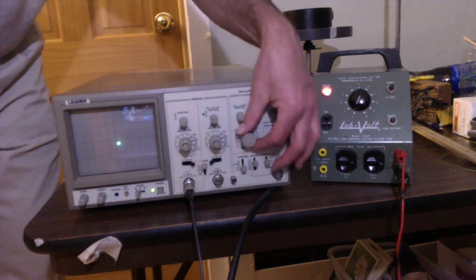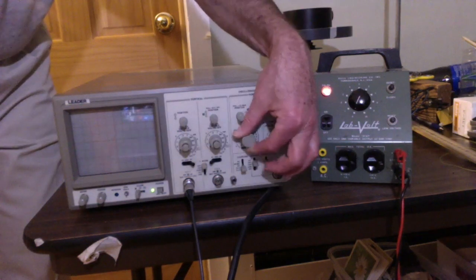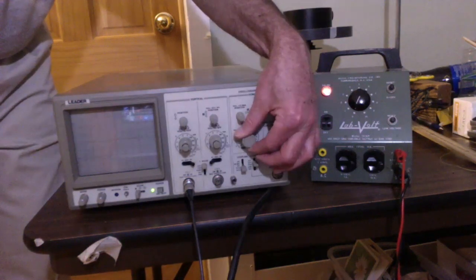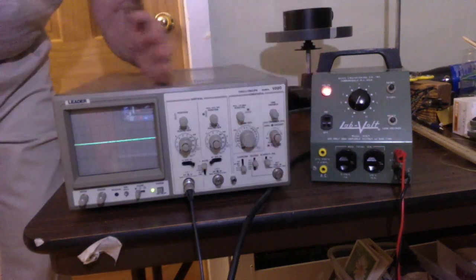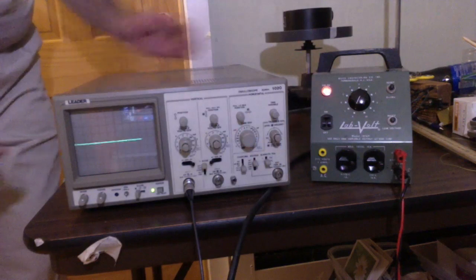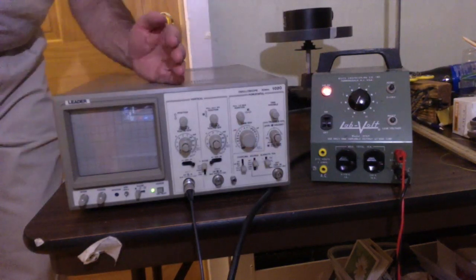This knob can control the voltage on the side plates and automatically change the voltage so the beam sweeps across. The beam sweeps across, the gun's turned off, the voltage is reset, and the beam sweeps across.